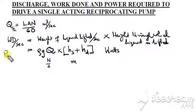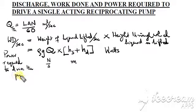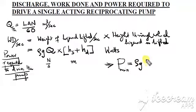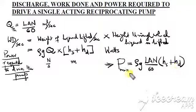This rate of work done is nothing but the power required to drive the pump. Of course, this is the minimum power required to drive a single acting reciprocating pump: P_min = rho × g × Q × (hs + hd). In expanded form, substituting Q = LAn/60, P_min = rho × g × (LAn/60) × (hs + hd). This quantity multiplied by 2 will be the power required to drive a double acting reciprocating pump.